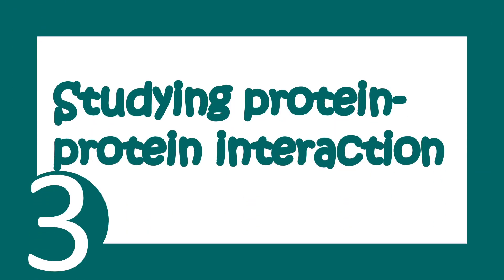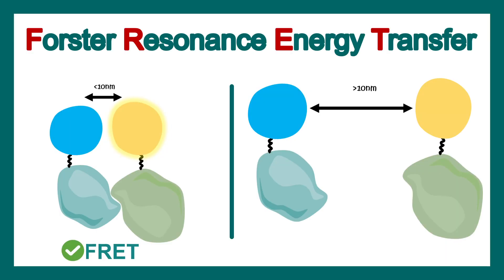As a third application, we can study protein-protein interaction using protein tagging methods. In this method we tag proteins with fluorophores or fluorescent proteins, for example cyan fluorescent protein (CFP) or yellow fluorescent protein (YFP). We can then perform the Förster resonance energy transfer (FRET) technique to understand whether two proteins are interacting with each other. If they are interacting there would be FRET; if they are not interacting there would be no FRET. So presence of FRET tells us about the protein-protein interaction.